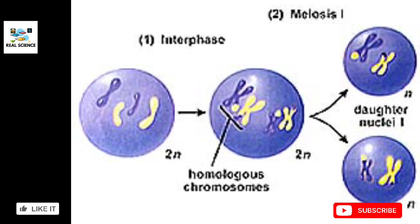As you can see in the diagram, meiosis one is now complete. The original 2n cell had already undergone DNA replication during interphase before meiosis one began. After meiosis one, the 2n cell has been converted into two daughter cells, each with n number of chromosomes. Now let's see how meiosis two occurs.